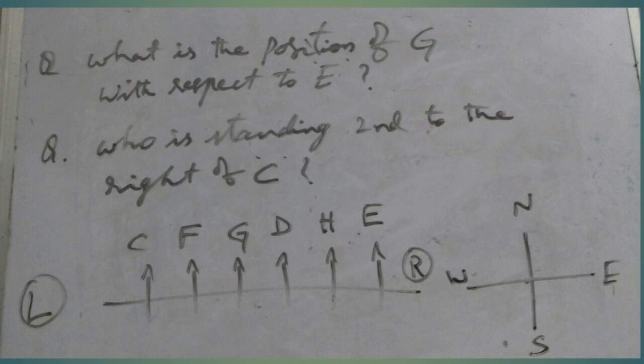According to the information given in the problem, the conditions are: D is standing second to the right of F; C is standing fourth to the left of H; H is not on the extreme end of the line; and E is standing second to the right of D.